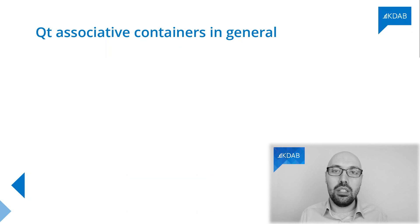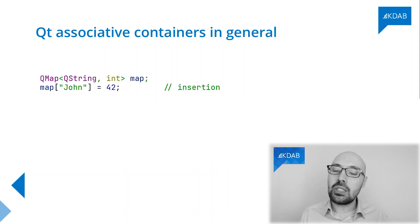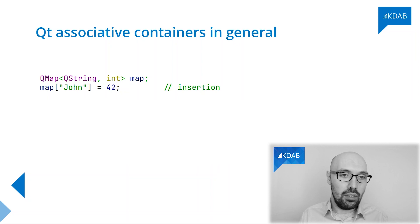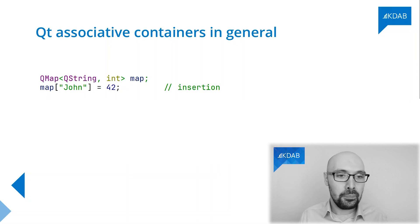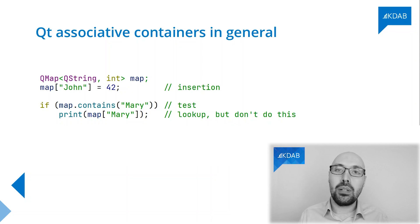If you want to have a look at what these container classes look like in code, take a look at this slide. What I have here is a simple class called QMap between strings and integers, and you have all the familiar APIs for insertion, lookup, and so on. You can use the subscript operator — the square brackets — as a form of retrieval, but also as a form of insertion. So you can insert a new key called John and map 42 to that key.